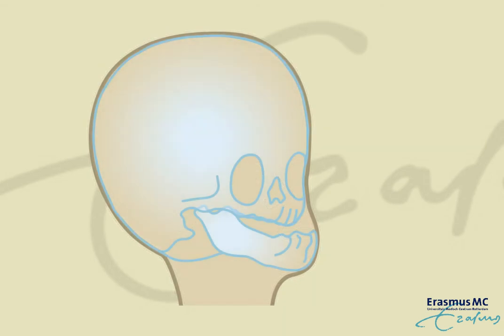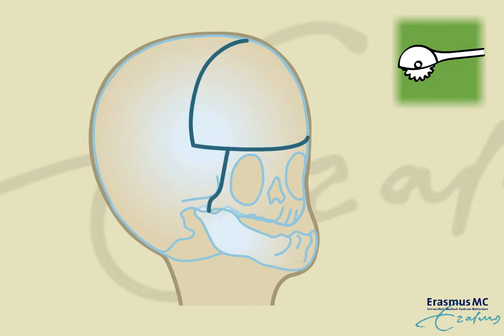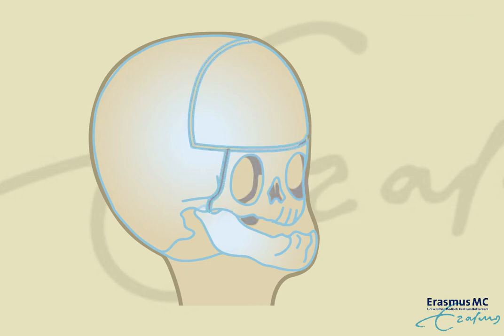This procedure is usually done with internal distractors to advance the bones. After removing the bone of the forehead, the orbits and upper jaw are cut. On each side, two distractors are placed, of which one is fixed behind the cheekbone and the other is fixed behind the upper orbital rim.